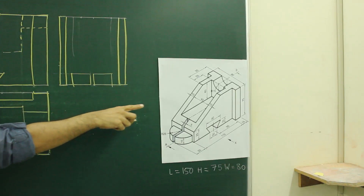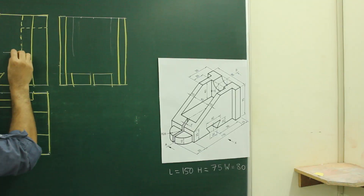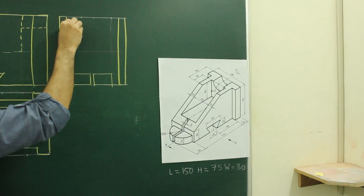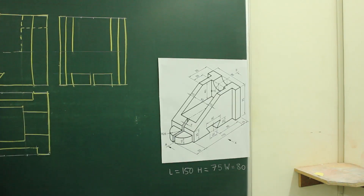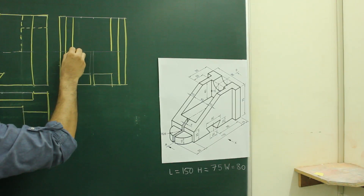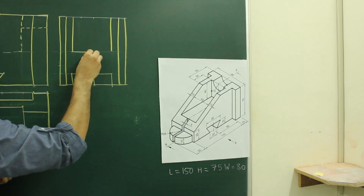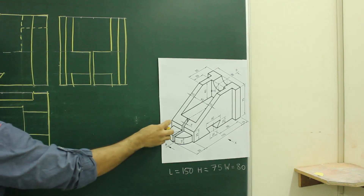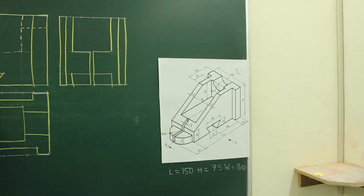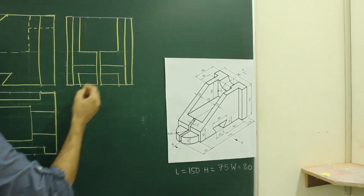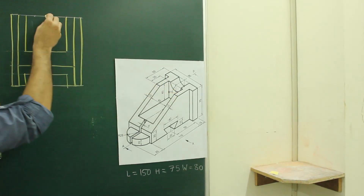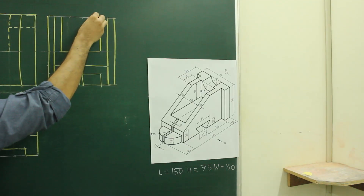Then project this — if you see this slope, 10 and 10 — and we will project from the front view. We need to extend this line. And when you see inside, you can see this circular part also; from the center we can draw radius 15.